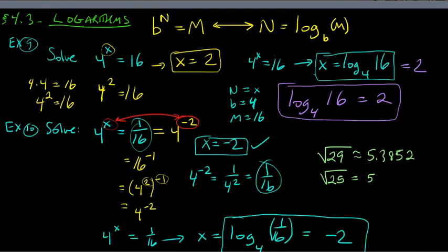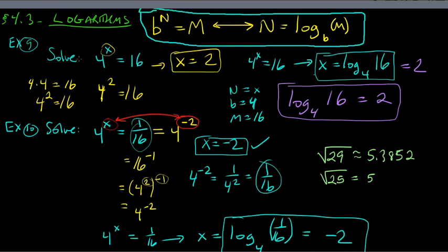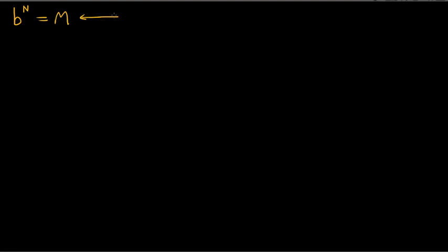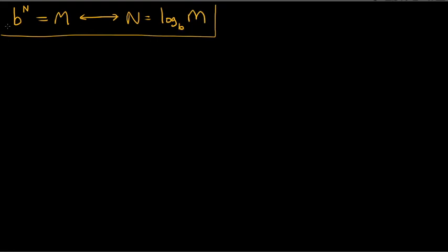So, the key conversion b to the n equals m ↔ n equals log base b of m is crucial for sections 4.4, 4.5, and 4.6. Now, why am I using n and m rather than x and y? Because we'll be switching those variables around, and I find generic letters less confusing. Let's think about f(x) equals 2 to the x — the exponential function from section 4.2.